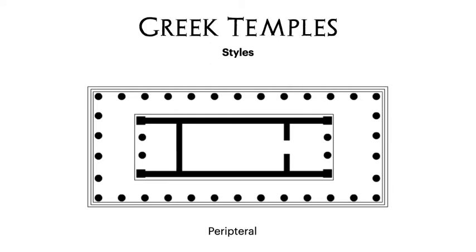You can still see here that we've got those three main parts. The pronaos, the front porch, is at the front. We've got the naos, the inner room, in the middle, and the epistodomos at the back. But there's just a colonnade all the way around the outside, which is what makes it a peripteral temple. And the Parthenon, which we'll be looking at in more detail, is a peripteral temple very much like this.